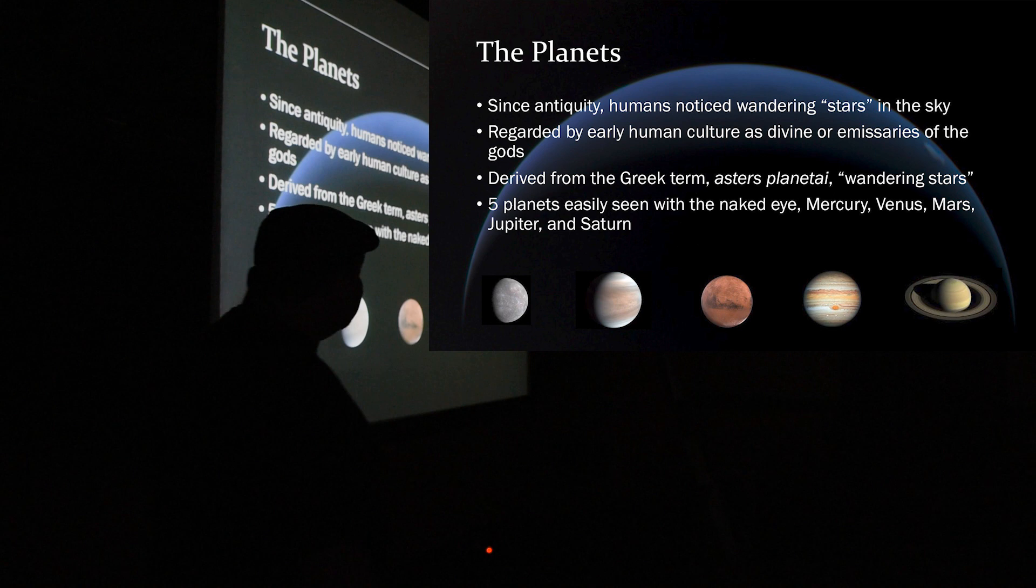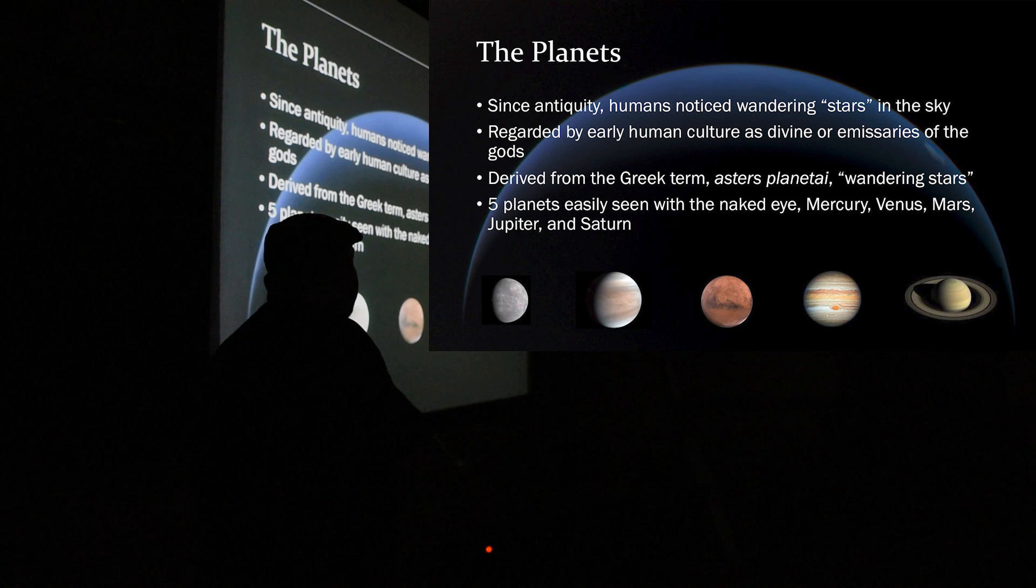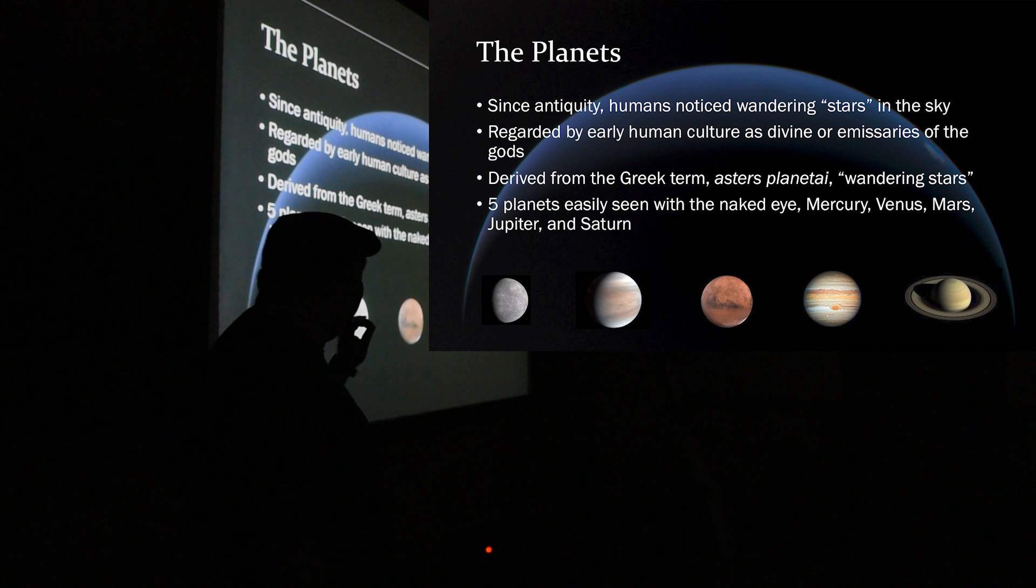So, the name planet came from a Greek term, and I'm going to butcher this, but I'm going to say it anyway. Astros planetai. Does that sound right? Okay. That literally means wandering stars. So, planets wander. How do they wander? Well, they have this thing called a retrograde motion.